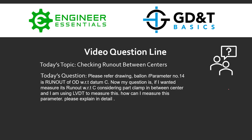Hey everybody, Jason here again with GD&T Basics video question line. Today's topic is checking runout between centers. The question submitted is: please refer to drawing balloon parameter number 14 — there's a runout on an OD with respect to datum C. The question is, if I wanted to measure its runout with respect to C, considering the part clamped between centers and using an LVDT to measure this, how can I measure this parameter?